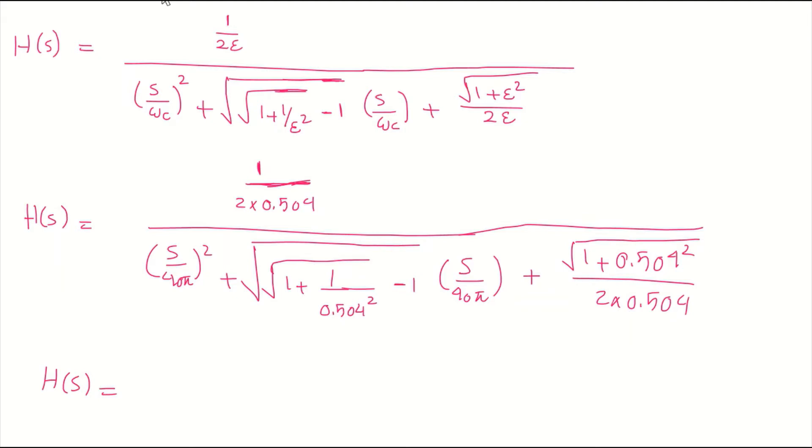If you do the calculation, you get something like 0.9921 in the numerator. In the denominator, we get s over 40 times pi squared plus 1.1054 s plus 1.1154.